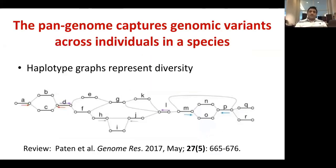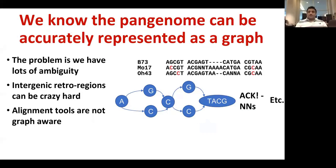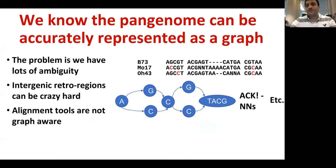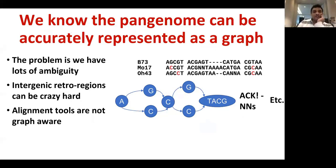A pan genome captures genomic variation of a species. Variation in a pan genome is represented as a graph — at a given position, if there is a SNP, it can be represented as a bubble. We know that a graph is a better representation of the pan genome, and many human genomics groups are also using this approach to develop practical haplotypes and pan genomes.